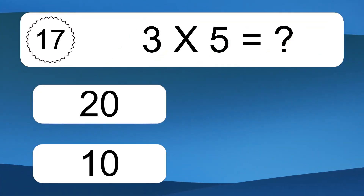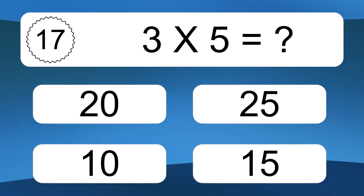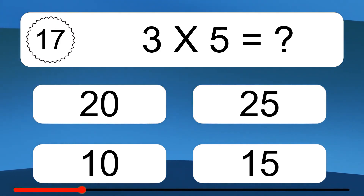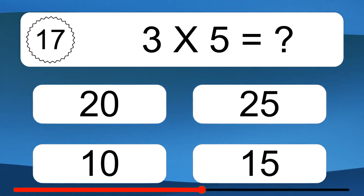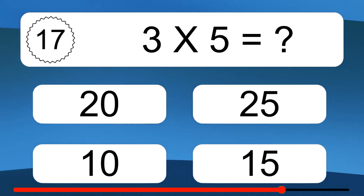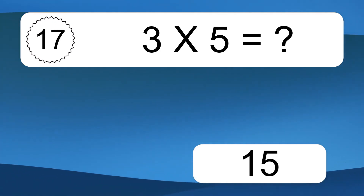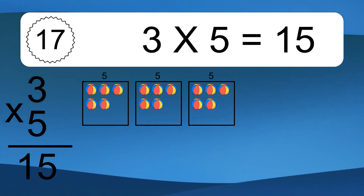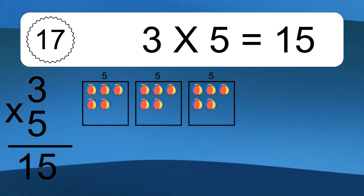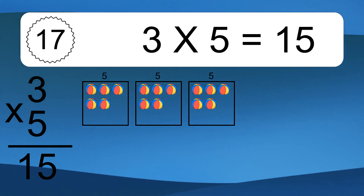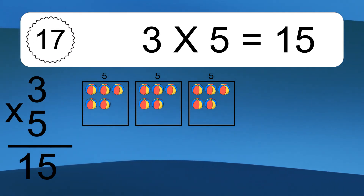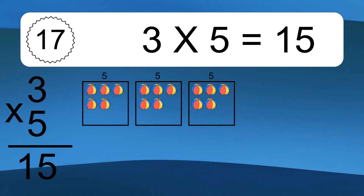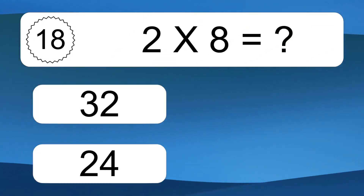Three times five equals what? Three times five equals fifteen. We have three boxes, and each box has five colorful balls inside. If you count all the balls in all the boxes together, you will have three times five balls. This equals fifteen balls.